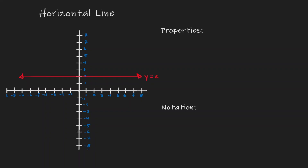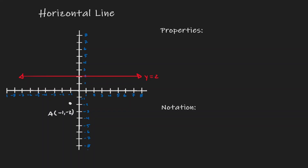Now let's choose a random point. If we want to reflect this point over the horizontal line y equals 2, we can think of this as folding the plane over this horizontal line. When we fold the plane, this point should land somewhere on the other side — going from the lower side of the horizontal line to the upper side. But where exactly does it land?